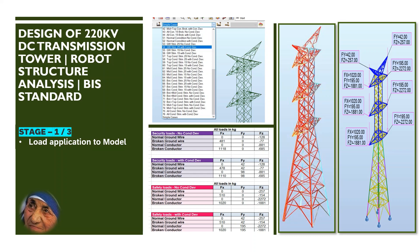We already calculated the loads and uploaded a 7-stage video series explaining how to calculate the loads of transmission line towers using IS 802 transmission line tower code. There is also another 3-stage video series explaining how to create a 220 kV double circuit transmission line tower model in Autodesk Robot Structural Analysis. All the links for those videos are given in the description.